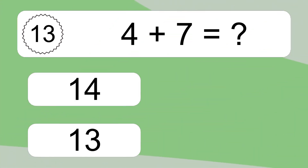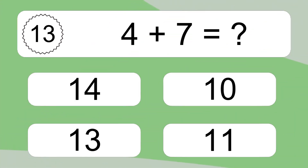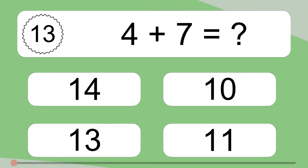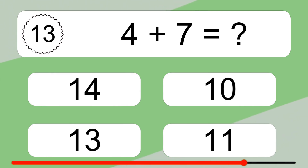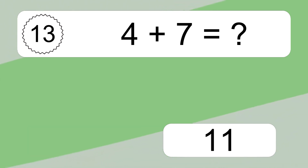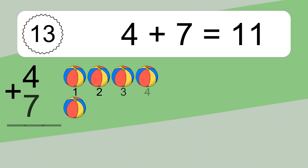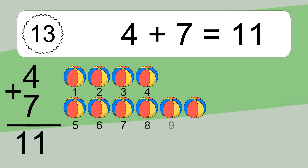4 plus 7 equals what? 4 plus 7 equals 11.